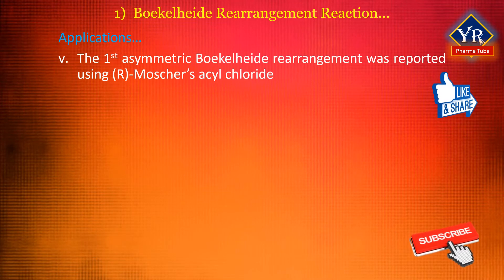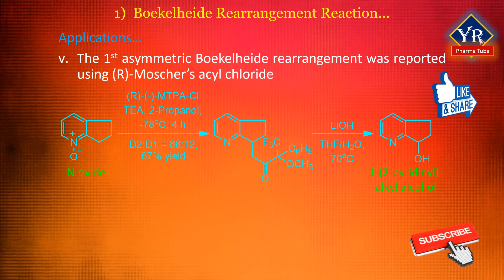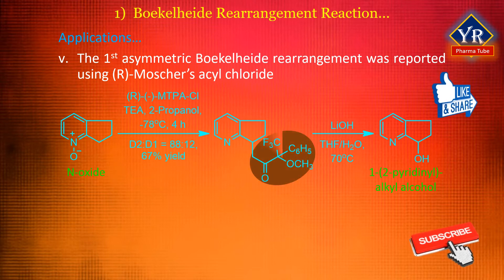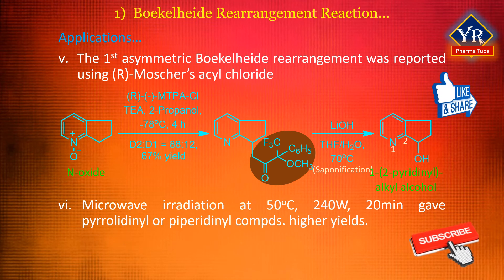Recently, the first asymmetric Boekelheide rearrangement was reported using Mosher's acyl chloride as the activator. Treatment of the N-oxide with Mosher's acid chloride using triethanolamine as a base at minus 78 degrees centigrade in 2-propanol allowed fast and complete rearrangement to the corresponding esters with an 80:12 diastereomeric ratio. Saponification with lithium hydroxide led to the enantiomerically enriched 1,2-pyridinyl alkyl alcohol derivative. Microwave irradiation at 50 degrees centigrade, 240 watts for 20 minutes gave pyrrolidinyl or piperidinyl compounds at higher yields.